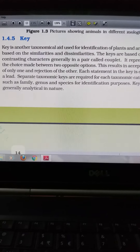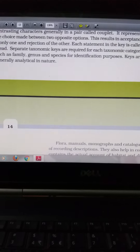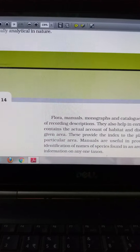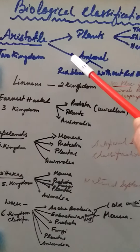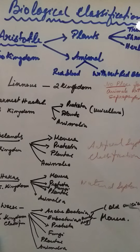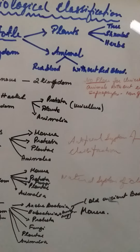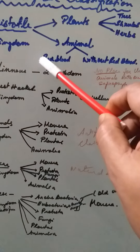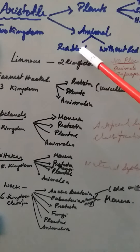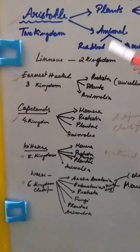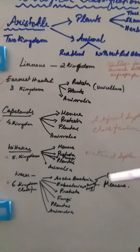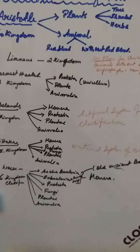In the next part, we will deal with biological classification historically. It was first done by Aristotle, who divided plants into three categories — tree, shrub, and herb — and divided animals into those with red blood and those with white blood. After Aristotle came Linnaeus. We will continue with this in the next session.